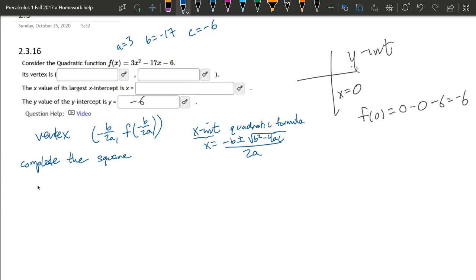So again, quadratic formula gives you the x-intercepts. You can either have no x-intercepts, one, or if this is positive inside the square, you get two. But instead we're going to complete the square.